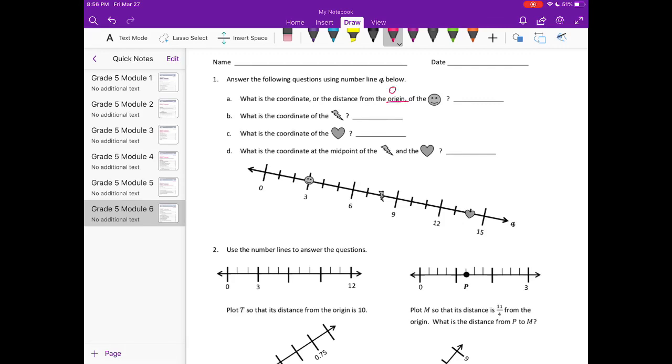0 right here. So the distance from the origin where here's the smiley face would be 1, 2, 3. The coordinate for that is 3. What is the coordinate of the lightning bolt? The lightning bolt's right here, it's 6, 7, 8, so the coordinate is 8.